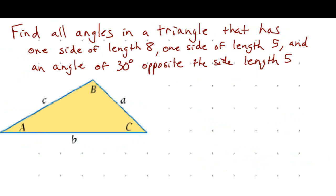Here's another example: find all angles in a triangle with side lengths of 8 and 5 and an angle of 30 degrees opposite the side of 5. Labeling the triangle, side b equals 8, side c equals 5, and big angle C equals 30 degrees — noting the triangle is not drawn to scale. This is a side-side-angle scenario.